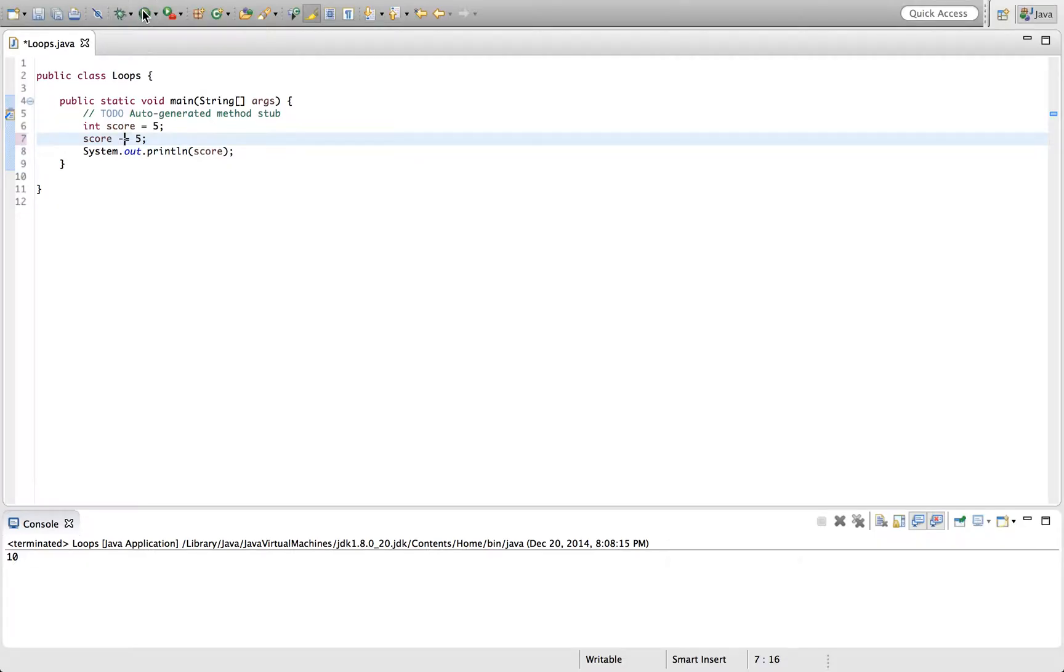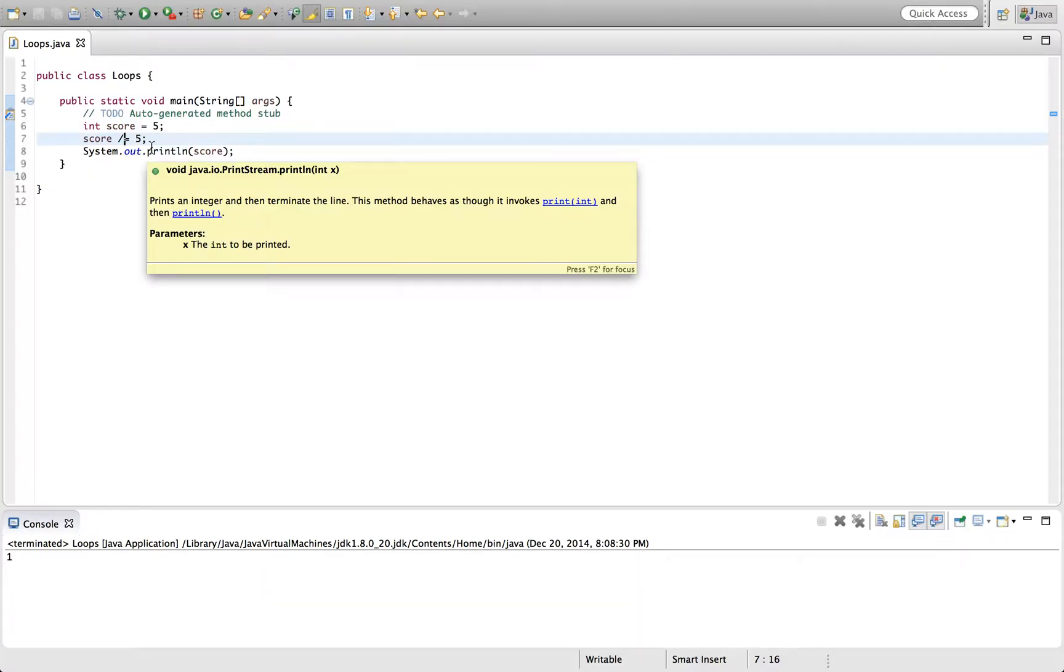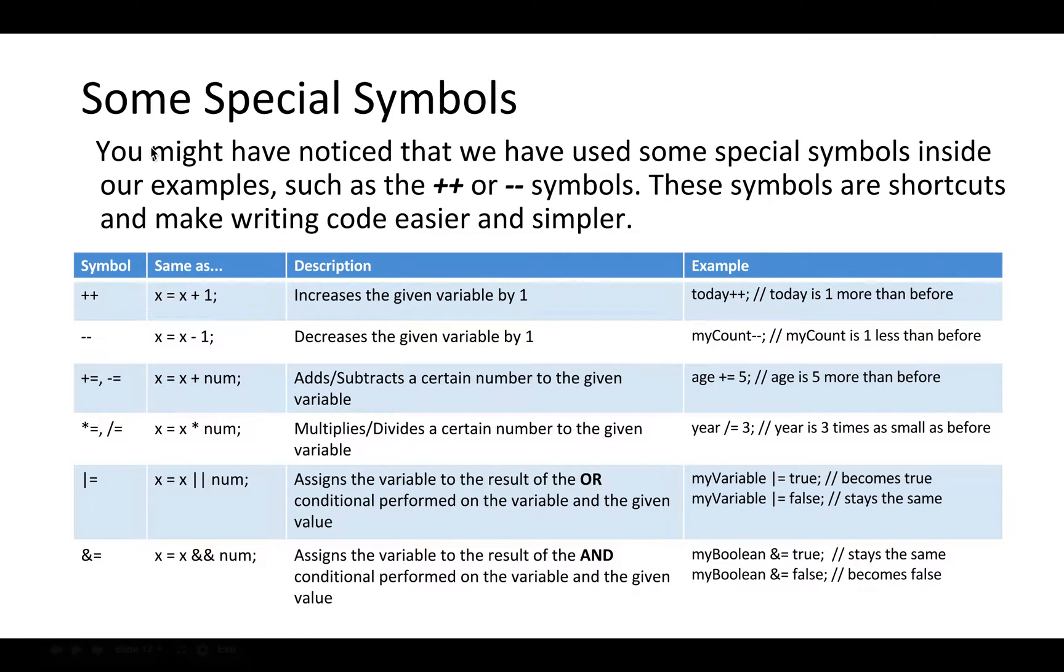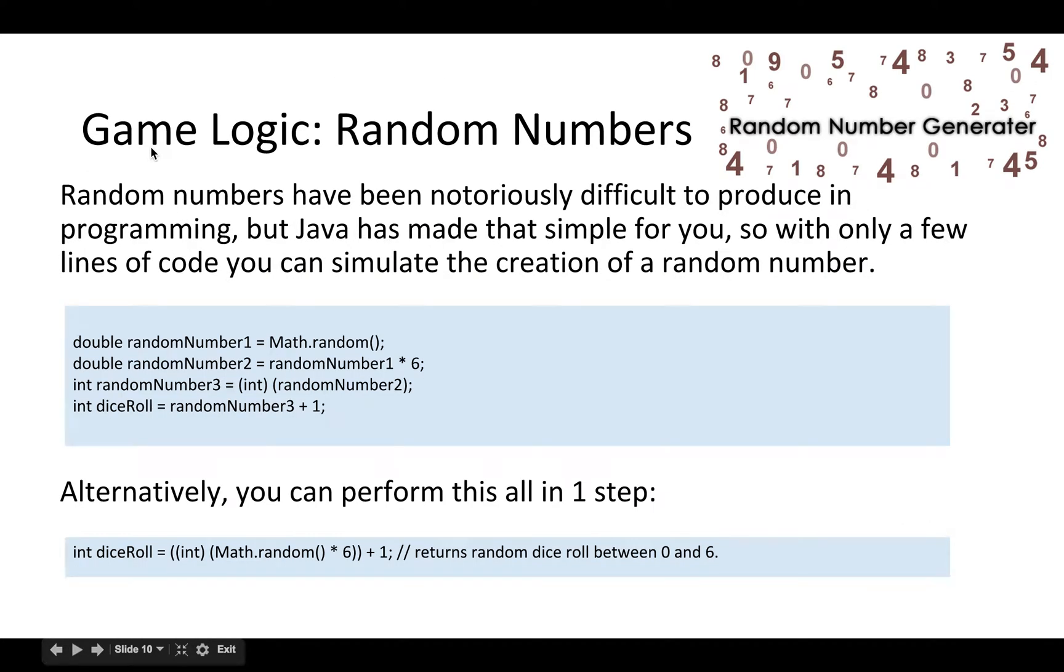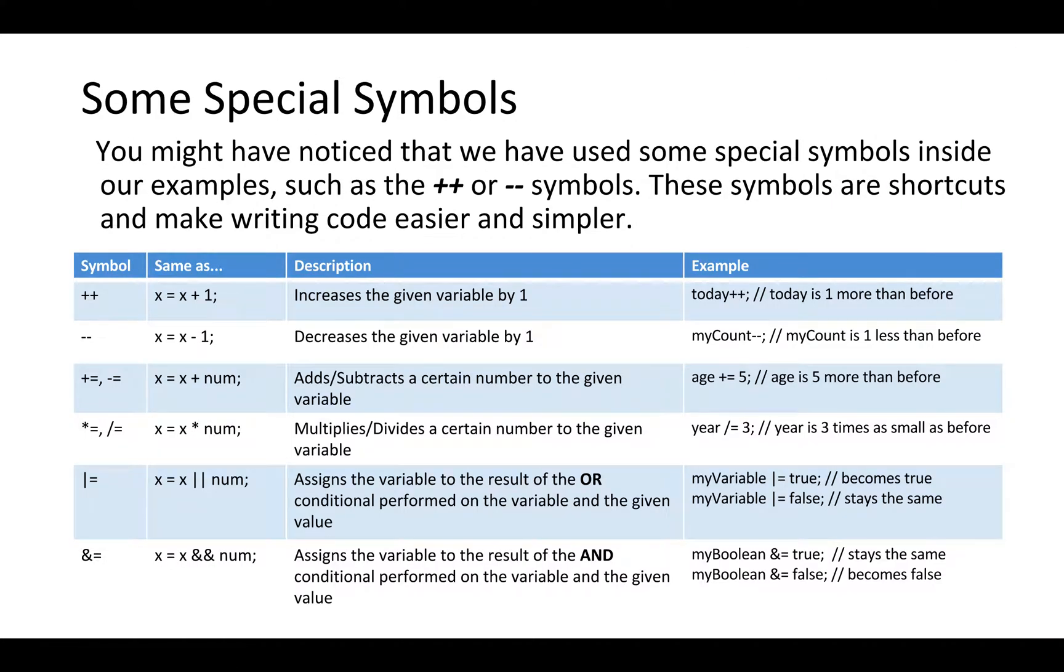Similarly, minus equals works the same way. Times equals multiplies the current value of score by five. So you get twenty-five. And divide equals divides the current value of score by five. And you'll get the value one. So yeah, these operators are known as the assignment operators. And they let you change the value of a variable and assign it. It's rather interesting what you can do with them.